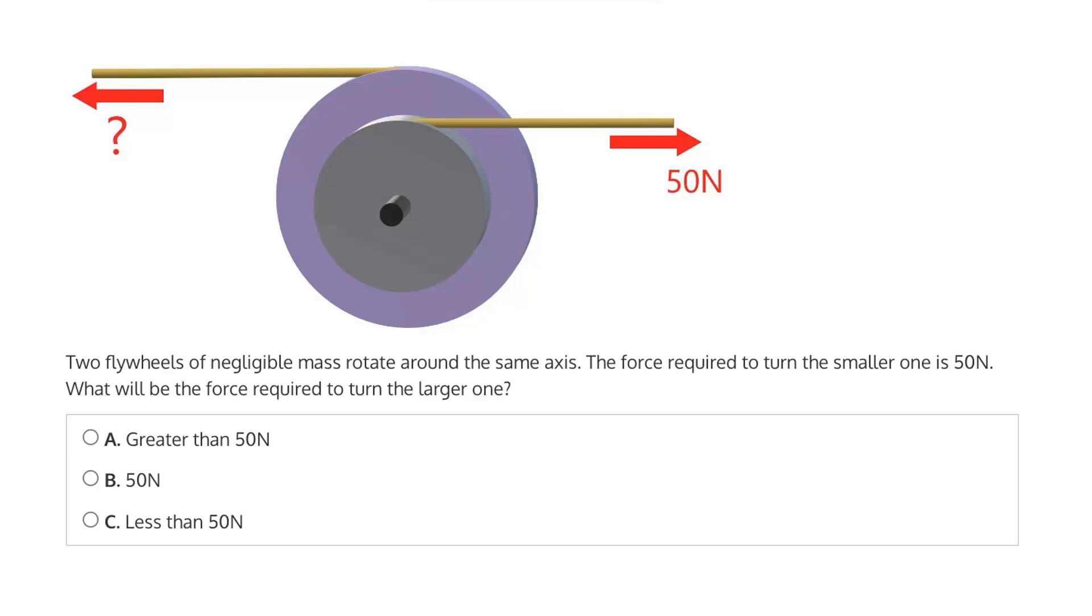This question says two flywheels of negligible mass rotate around the same axis. And that axis is this black rod here. Then it says the force required to turn the smaller one is 50 newtons. What would be the force required to turn the larger one?